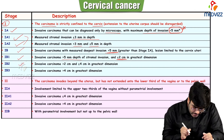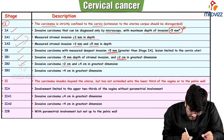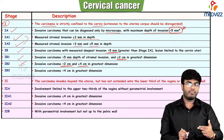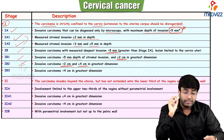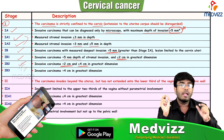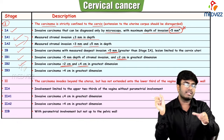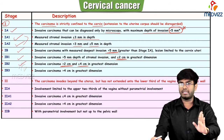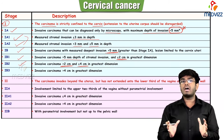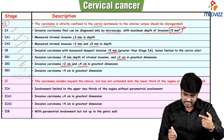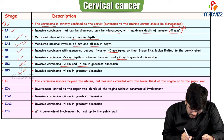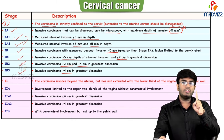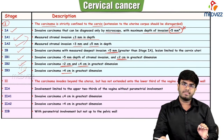Stage 1b1: stromal invasion greater than 5 mm, tumor size less than 2 cm. Stage 1b2: cancer size is more than 2 centimeters but less than 4 centimeters. Important point at 1b2: cancer size exceeds 2 cm, so do not think about fertility-sparing surgery. Stage 1b3: cancer size is greater than 4 centimeters in the greatest dimension.